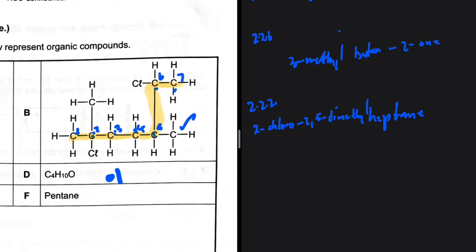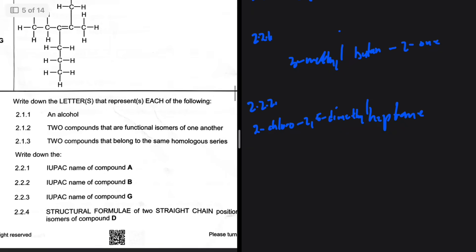Let's verify: 2-chloro — yes, it's there. One, two, three, four, five — 2,5-dimethylheptane. That seems correct. If we started numbering from the other side, we'd get 5-chloro with methyl groups on positions three and five — that gives larger numbers, so starting from the left is the better option. The answer to 2.2.2 is 2-chloro-2,5-dimethylheptane.